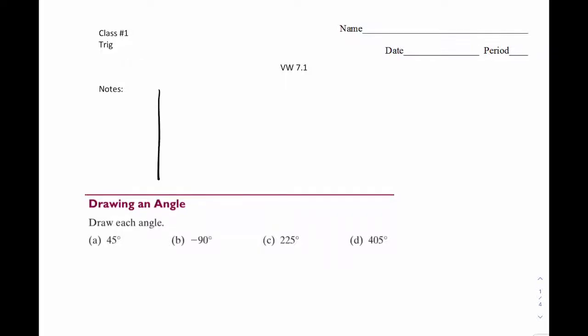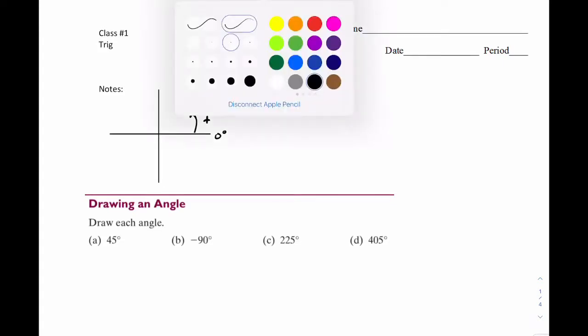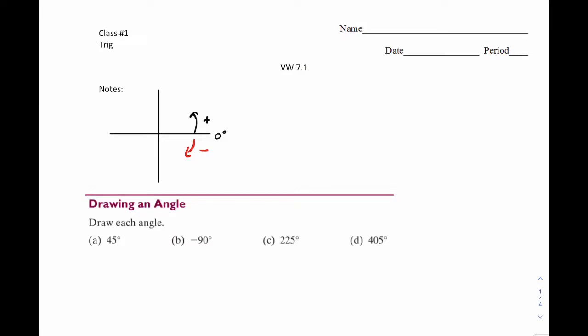To start, I want you guys to draw this x, y-axis like this. Here's our zero degrees — this is going to be true for the whole class. Think of this x-axis on the right; that's where we're going to start for all our angles. If you rotate up first, or counterclockwise, that's considered a positive rotation. If we rotate down first, or clockwise, that's considered a negative rotation.